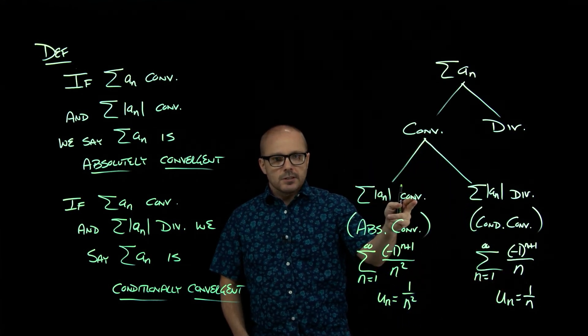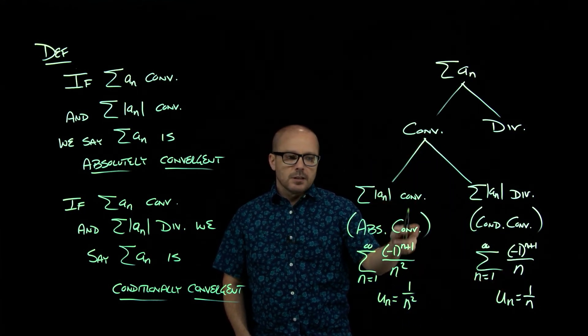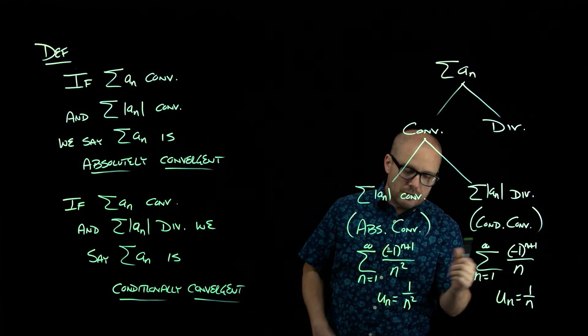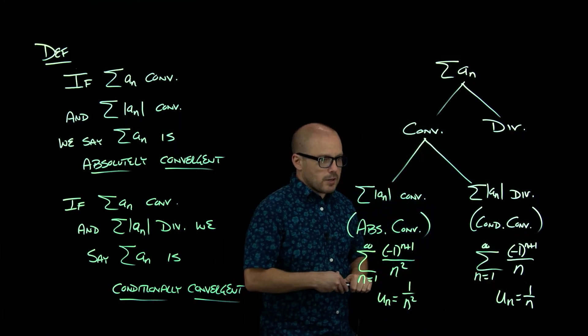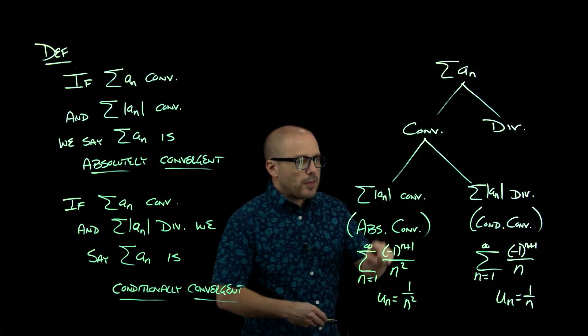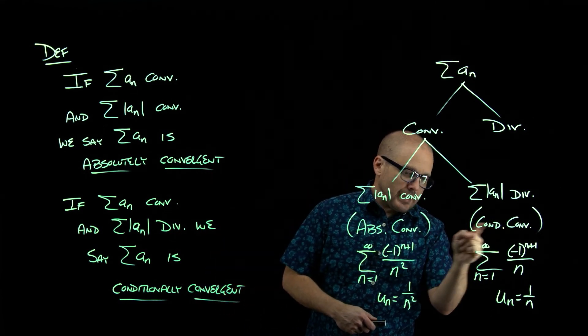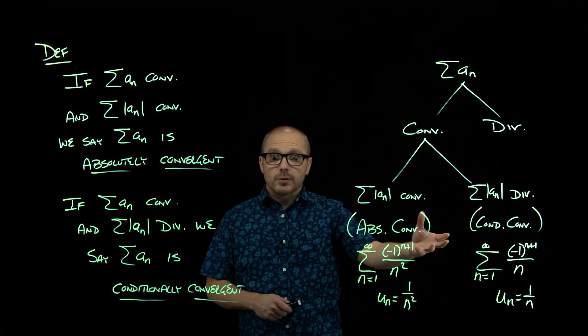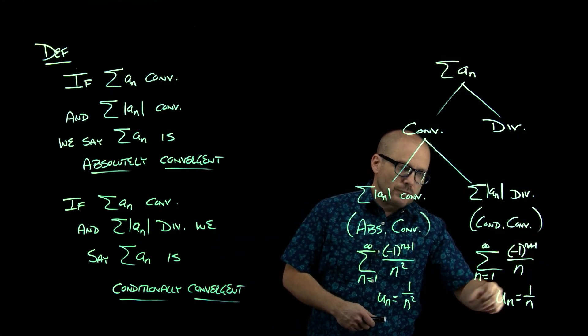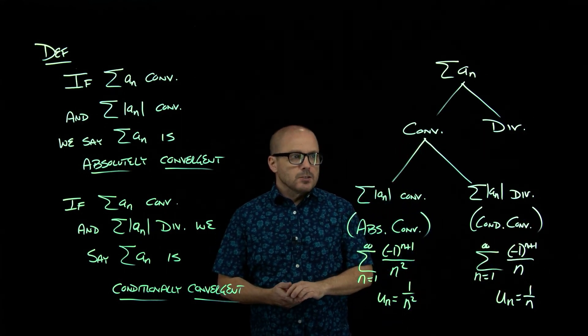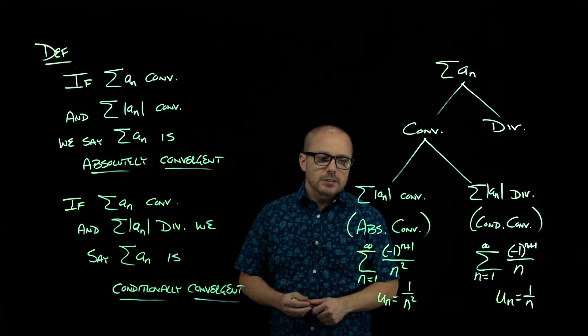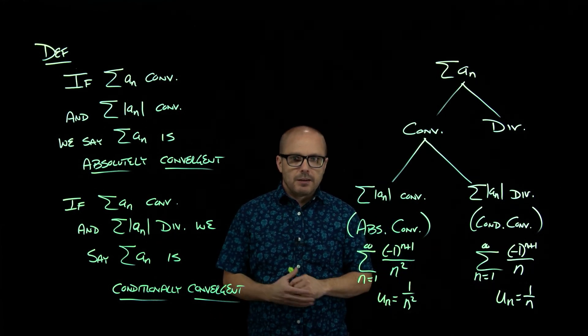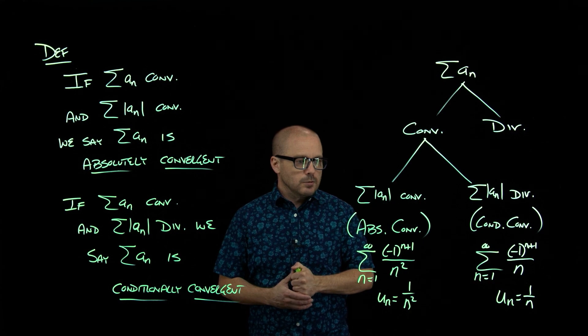So these are both convergent series. No problem there, they are convergent. But they have different flavors of convergence. This is absolute because if you took the absolute value, that's also convergent. Here if you take the absolute value, you get something divergent. So the series itself is convergent, but there's different behavior when you look at the absolute value in those two.